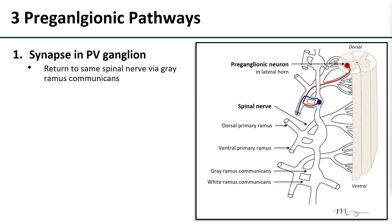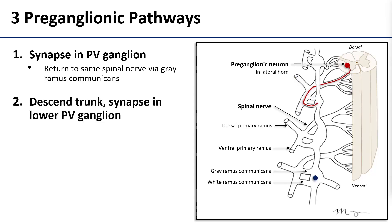What we just walked through is one of three pathways that preganglionic sympathetics can take to reach head and neck structures. I also want to add that it is completely possible for that postganglionic axon to turn around and head out the dorsal primary ramus as well — they are not restricted to just ventral primary ramus; they only have to enter that to get to the paravertebral ganglion.